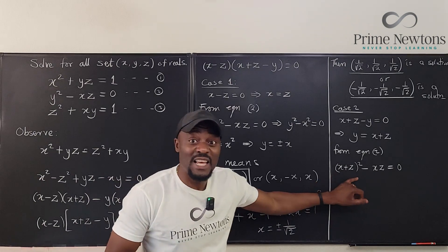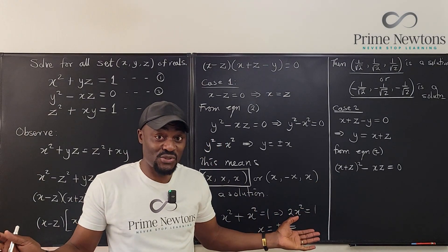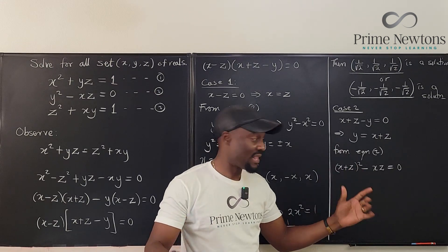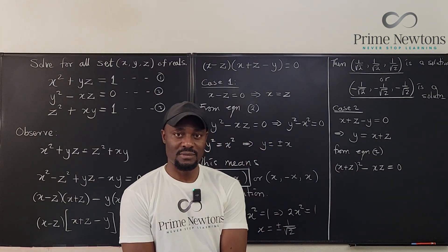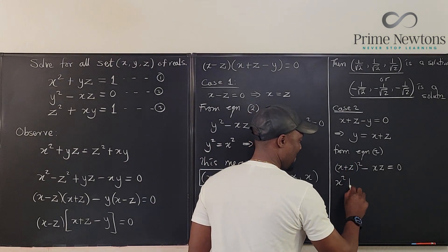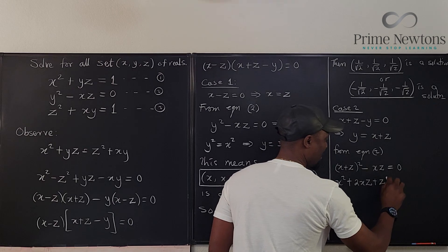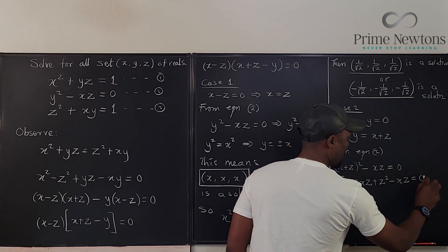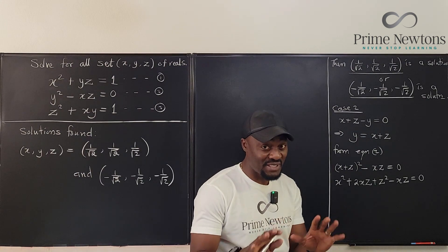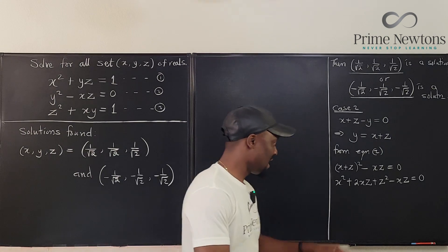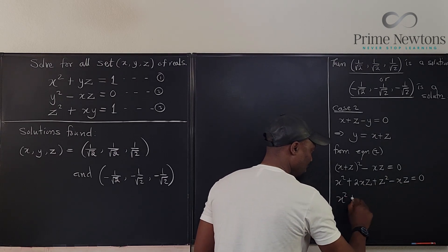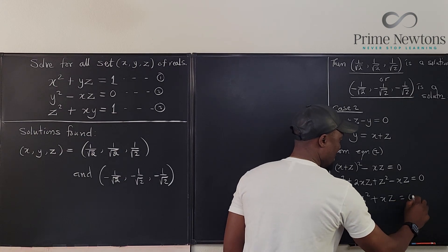Expanding: x plus z squared minus xz gives x squared plus 2xz plus z squared minus xz, which simplifies to x squared plus xz plus z squared equals 0. We need to show that this equation has no real solutions.